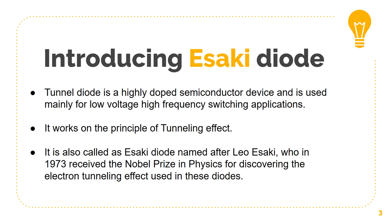Tunnel diode is a highly doped semiconductor device and is used mainly for low voltage, high frequency switching applications. Impurity concentration is approximately one part in 10 to the power 3, as compared to one part in 10 to the power 8 in a PN junction diode.